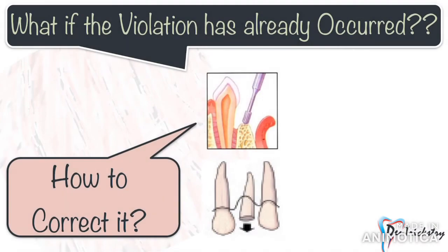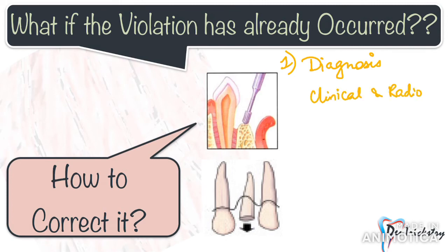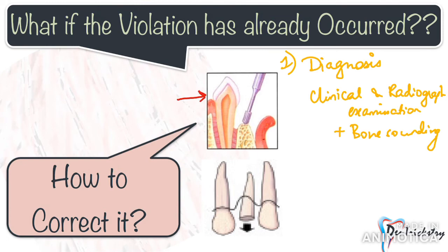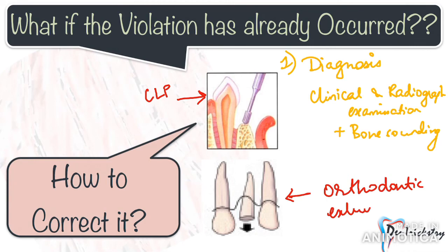Finally, what if the violation has already occurred? How do you correct a biologic width violation? First, diagnose the problem using clinical and radiographic examination, with bone sounding as the most predictable method. Once confirmed, you essentially have two options: move the margin away from the bone, or move the bone away from the margin. In most cases, create 2.5 to 3 millimeters of space between the margin and the bone. The two ways to achieve this are crown lengthening procedure and orthodontic extrusion.